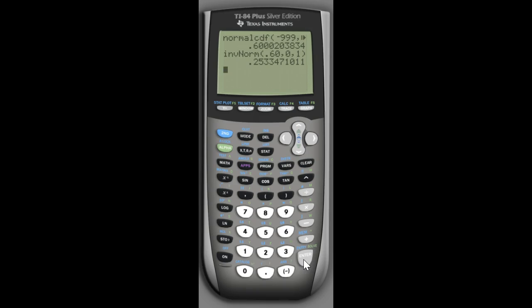But if I do that, I'm rounding down. If I round down, I'm actually going to be with less than 60% below me. So when you're doing this, you always, always, always round up.